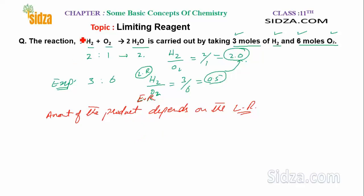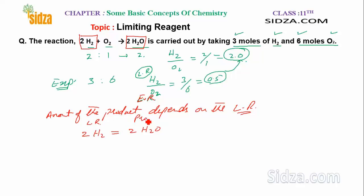Hydrogen is the limiting reagent and we need to find the amount of water formed. From the balanced equation, 2 moles of hydrogen produce 2 moles of water, so the ratio is 1:1. Therefore for 3 moles of hydrogen, we get 3 moles of water.